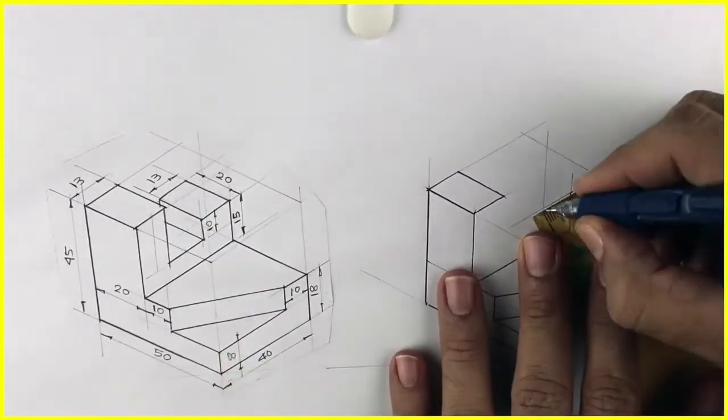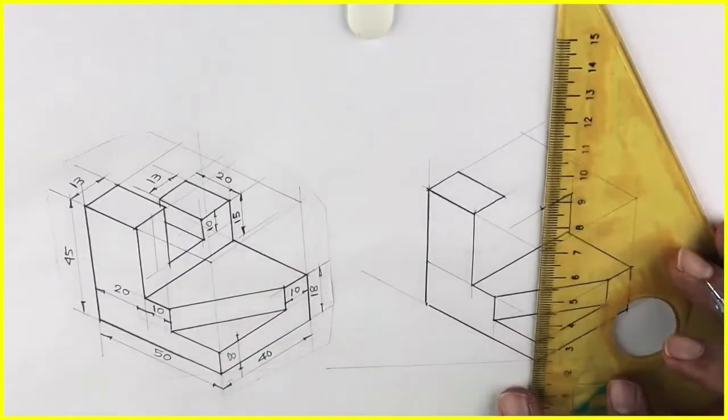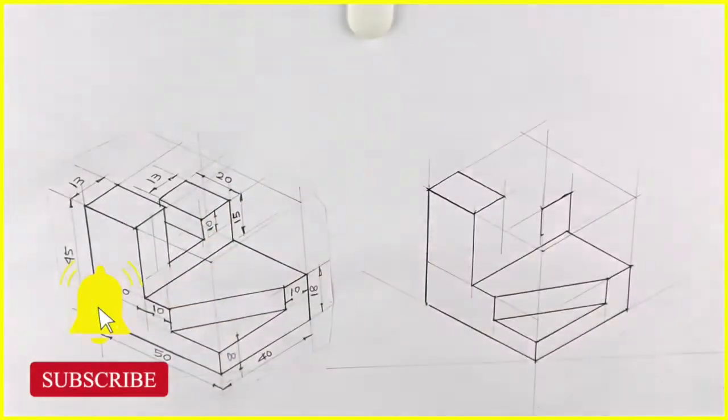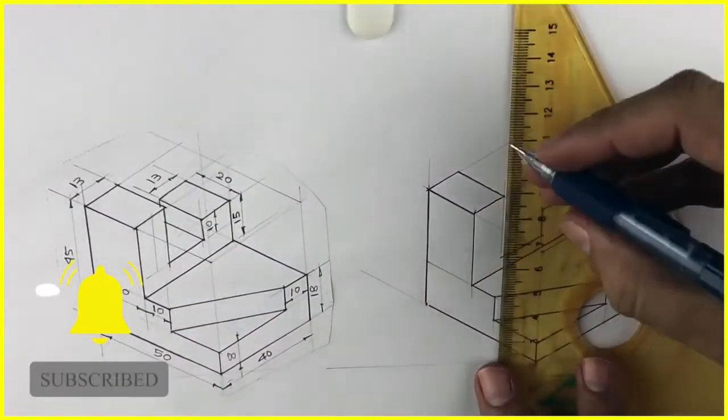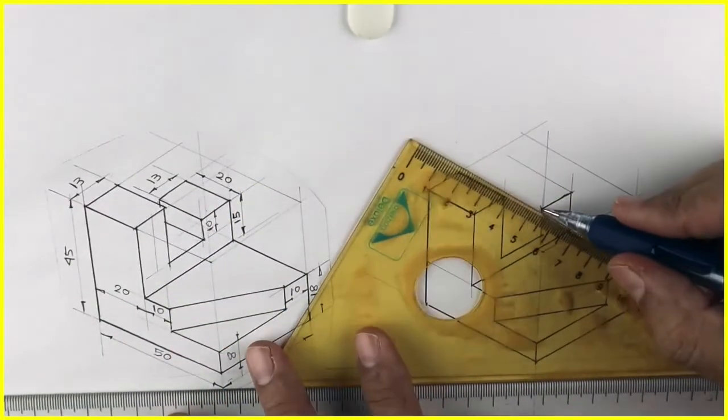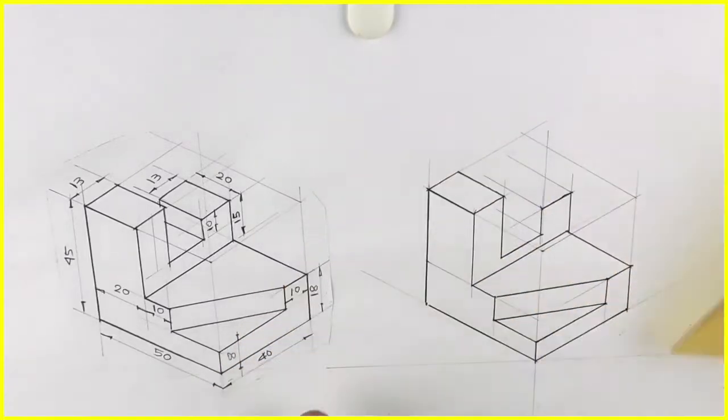We will go up by 15, then we will take 13, go down by 10, and then we will extend, so we will get that height. Then we will go behind by 20. All lines we go behind by how much? 20.